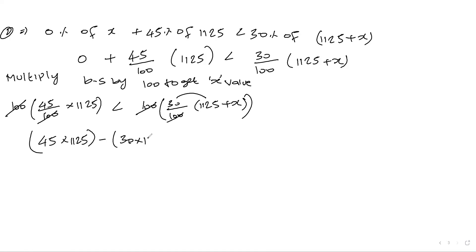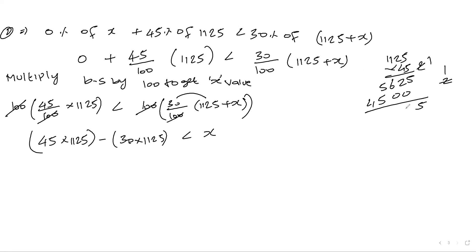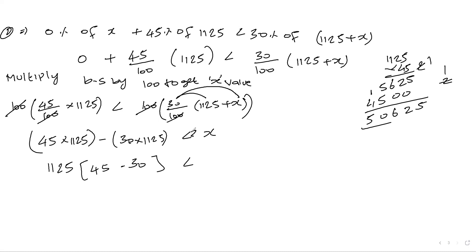Rearranging: 1125 into 45 minus 30 into 1125 is less than 30x. So 1125 into (45 minus 30) is less than 30x. That gives 1125 into 15 is less than 30x, which equals 16,875 is less than 30x.